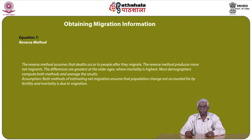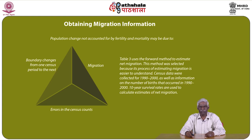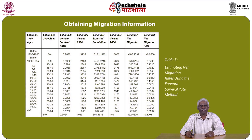The assumptions for both methods state that population change not accounted for by fertility and mortality is due to migration. Population change not accounted for by fertility and mortality may also reflect errors in census counts or boundary changes between census periods. Table 8.3 uses the forward method to estimate net migration using census data from 1990 to 2000, information on births from 1990 to 2000, and 10-year survival rates. The table depicts, over different age groups, how the different components are used to obtain net migration results.